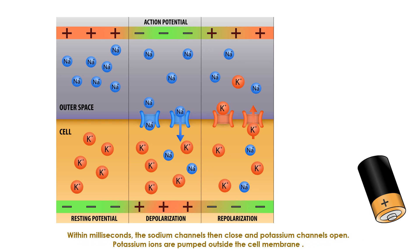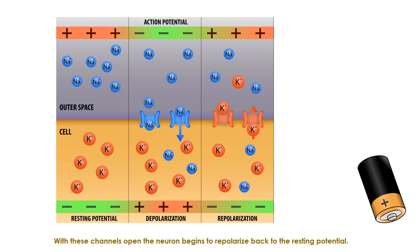Within milliseconds, the sodium channels then close and potassium channels open. Potassium ions are pumped outside the cell membrane. With these channels open, the neuron begins to repolarize back to the resting potential.